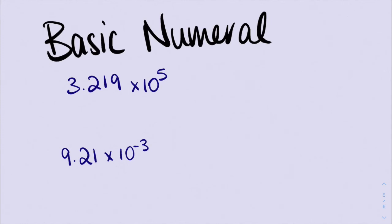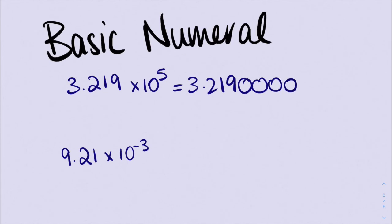All right, so for this first one, we can see that our 10 is to the power of a positive number — it's to the power of positive 5. So we're going to write our 3.219 out the front, then add some extra zeros on the end so we can move our decimal place. That 5 tells me I'm going to move my decimal place back 5 places: 1, 2, 3, 4, 5 — and that's where it's going to end up. So our final answer is 321,900.